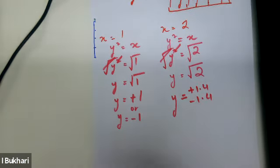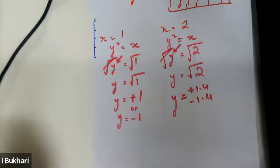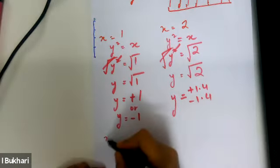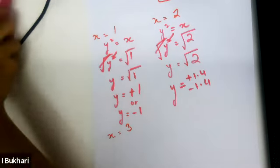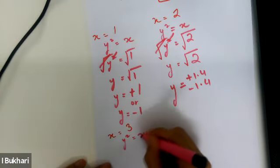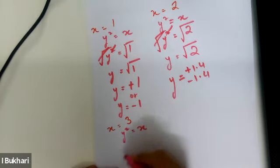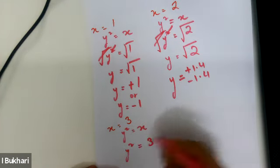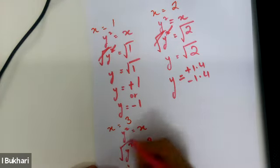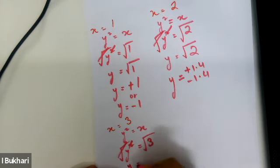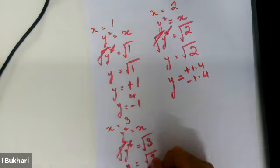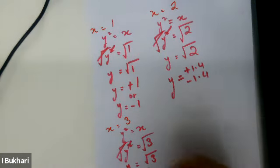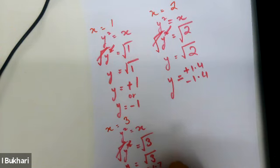For x equals 3: y squared equals 3, so taking the square root of both sides gives y equals plus 1.7 or minus 1.7.